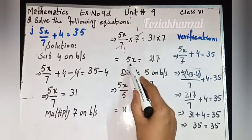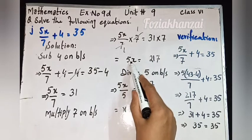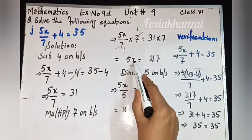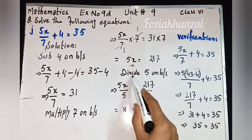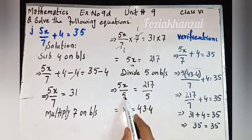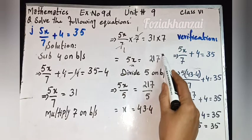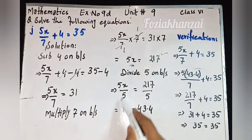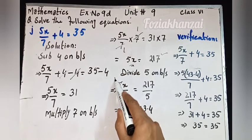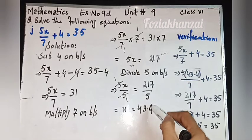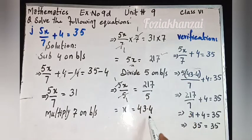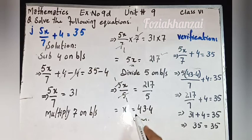5x is equal to 7 times 31. 7 threes are 21, so after multiplying, 217 is left. So 5x is equal to 217. Now we apply division property — divide 5 on both sides. 5x upon 5 is equal to 217 upon 5. 5 ones are 5 — cancel and reduce.